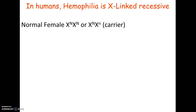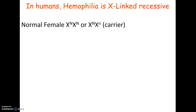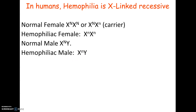In humans, hemophilia is a sex-linked recessive trait — a blood clotting disorder where people bleed more easily. A normal homozygous female is X^N X^N, and a heterozygous female is X^N X^n — she looks normal but is called a carrier because she carries the trait without showing it and can pass it to offspring. A hemophiliac female would be X^n X^n. A normal male is X^N Y and a hemophiliac male is X^n Y — males only have one X.